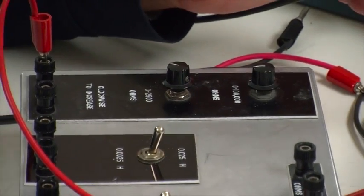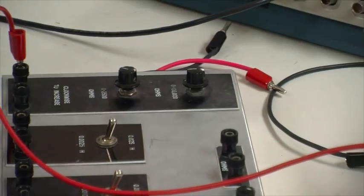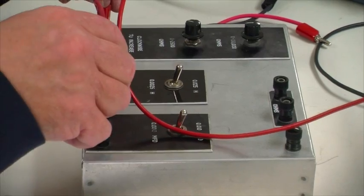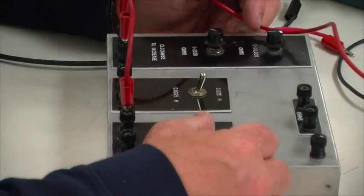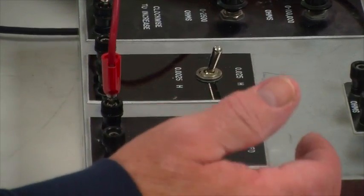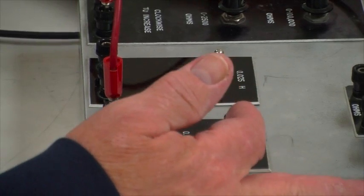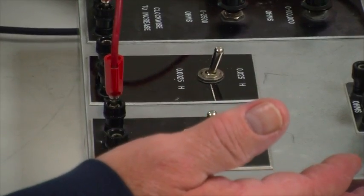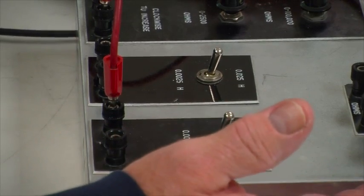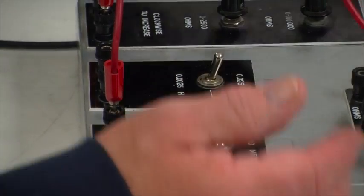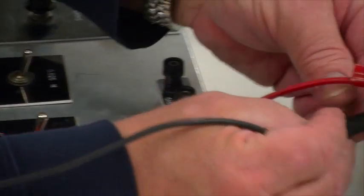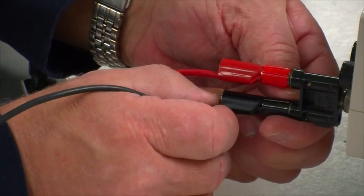Now in series with that, we put the capacitance. And here, by throwing this switch, we can either get a 0.01 microfarad or a 0.001 microfarad capacitor. Let's start with the 0.01 microfarad capacitor. And then we have to complete the circuit, of course, by going back to the function generator.